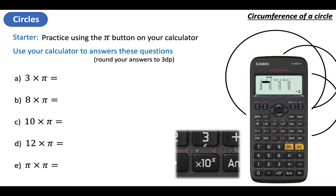What that means is you need to press Shift to get that one. The Shift button is that one there, and if you press that and then press this button you will get Pi on your calculator. Now if your calculator does not do Pi, you could always use 3.14 as an estimation. But you really need to get yourself one of these if you haven't. There are also all sorts of online calculators you could use today.